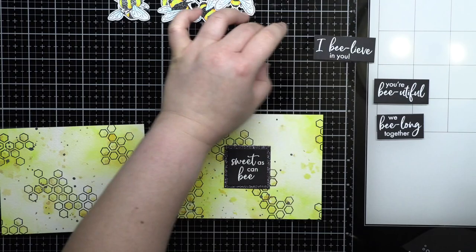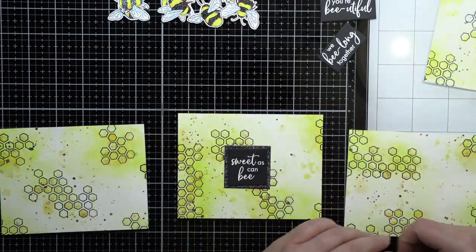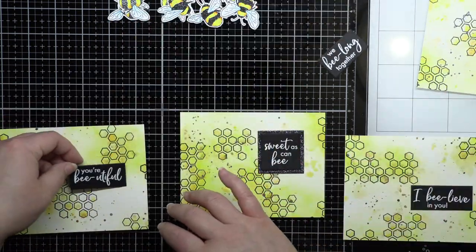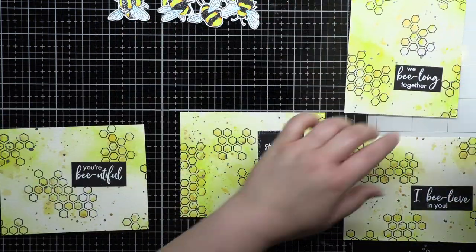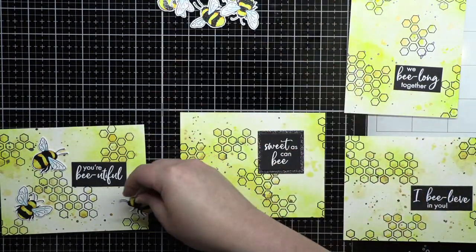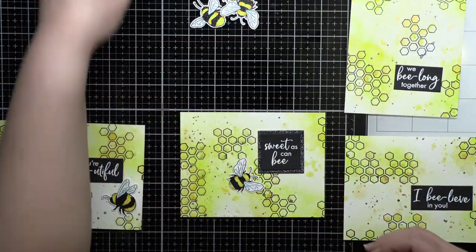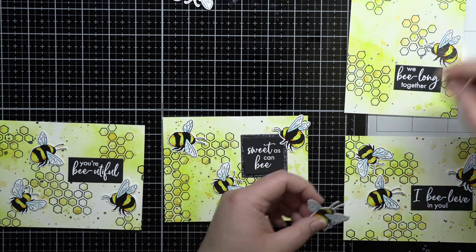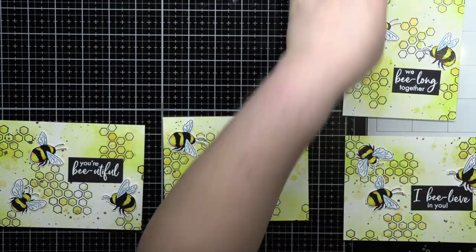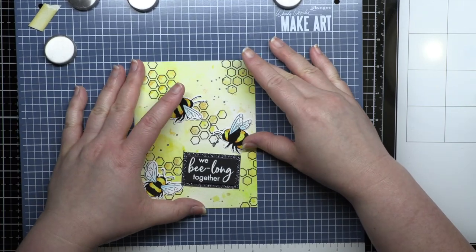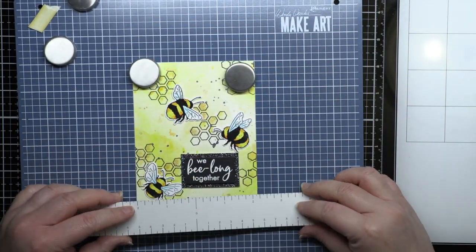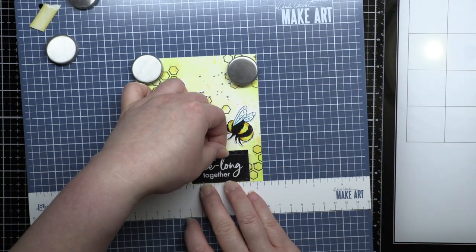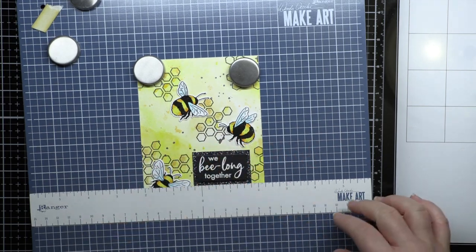Then I play around with each panel deciding what orientation I prefer, portrait or landscape, and where I want the bees and sentiments. I lay out each card design just to get an idea for the finished panels. Once I finish arranging the panels, I use foam mounting tape to adhere the sentiment and bees to each panel. I use my Wendy Vecchi station to line up my sentiment, and after I add the bees, I adhere the panels to my card bases.